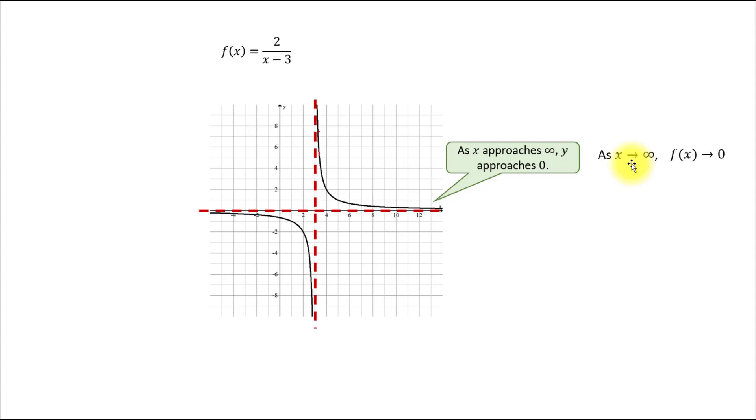And this is one of the ways to write this mathematically. Instead of where it approaches, we use an arrow. Also notice that instead of saying y approaches infinity, I'm writing f of x, or function approaches infinity. Well, after all, f of x is the same as y. They both represent values of a function. There is also the limit notation that can be used. We say that limit of f of x as x approaches infinity equals zero.